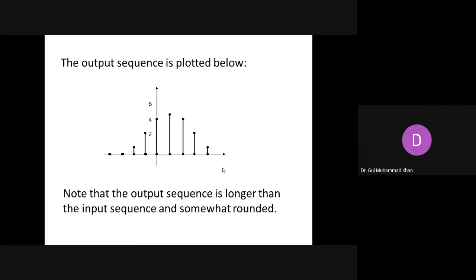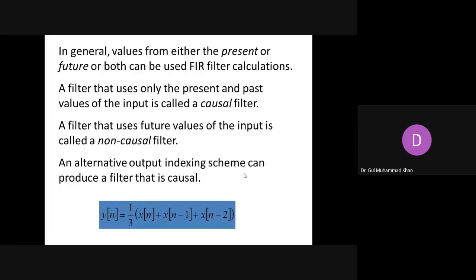This length increase is an issue with digital systems, and we will discuss later how to ensure inputs and outputs are exactly the same length. If you supply five samples as input, the output should also have five. The previous non-causal expression used x[n], x[n+1], and x[n+2], which depends on future values. The actual expression is called either a running average filter or moving average filter — both terms refer to essentially the same thing.